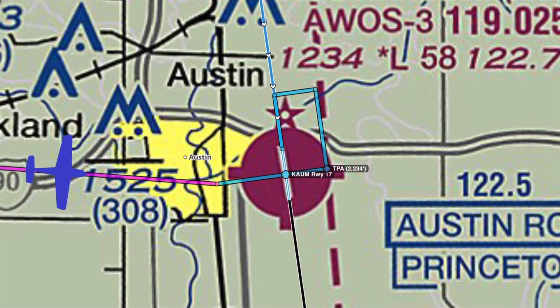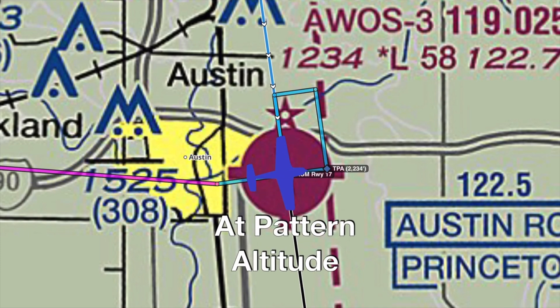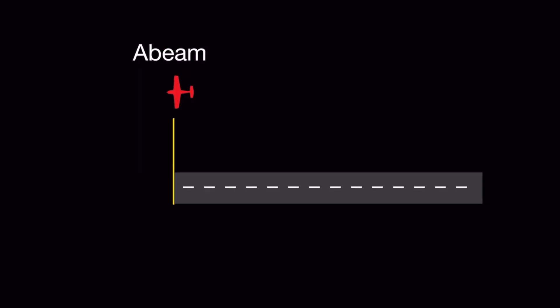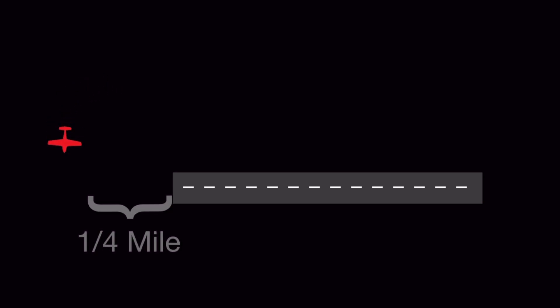If the pattern is not busy, another acceptable method for entering from the upwind side is to approach the airport and cross midfield at pattern altitude, then immediately turn downwind. In this scenario, you need to be very careful about fitting yourself into the flow of any existing traffic. Once in the pattern, maintain pattern altitude until you are abeam the approach end of the landing runway on the downwind leg. The base leg turn should start when the aircraft is at a point approximately 45 degrees relative bearing from the approach end of the runway — the threshold being roughly halfway between the trailing edge of the wing and the tail of the airplane.